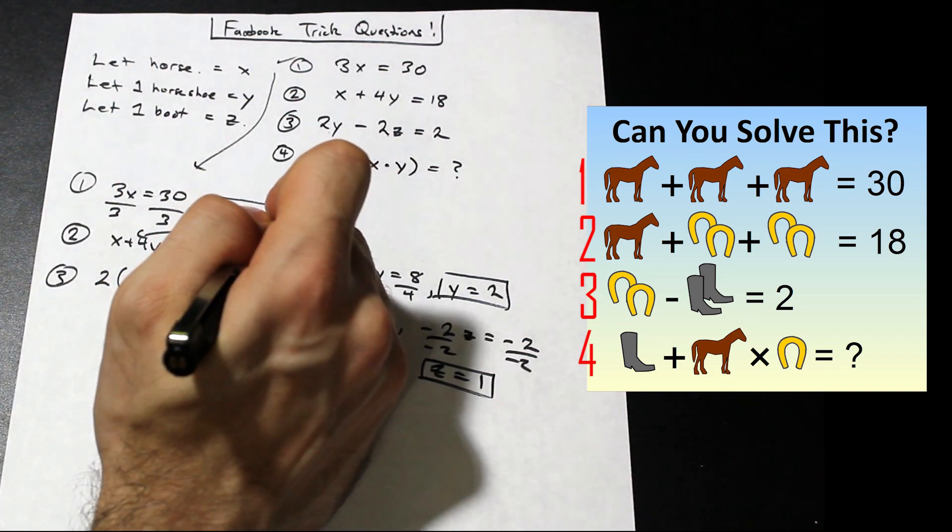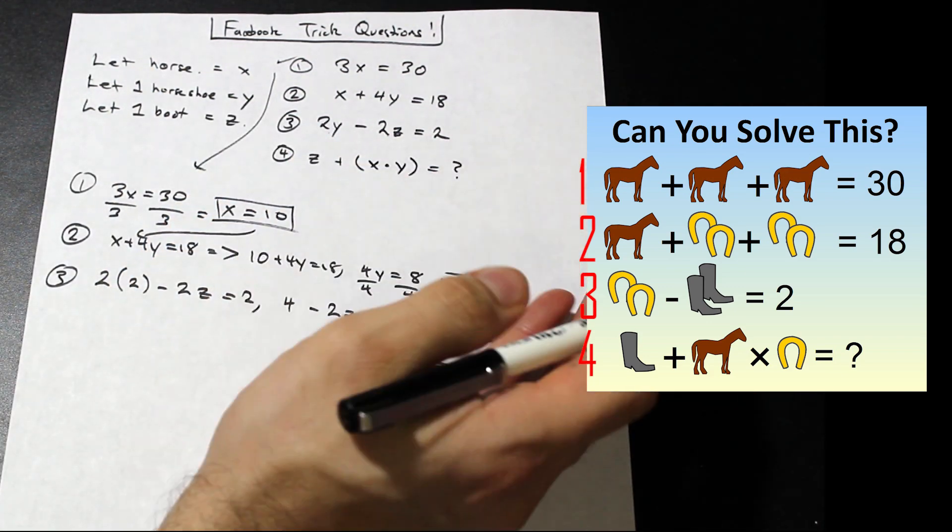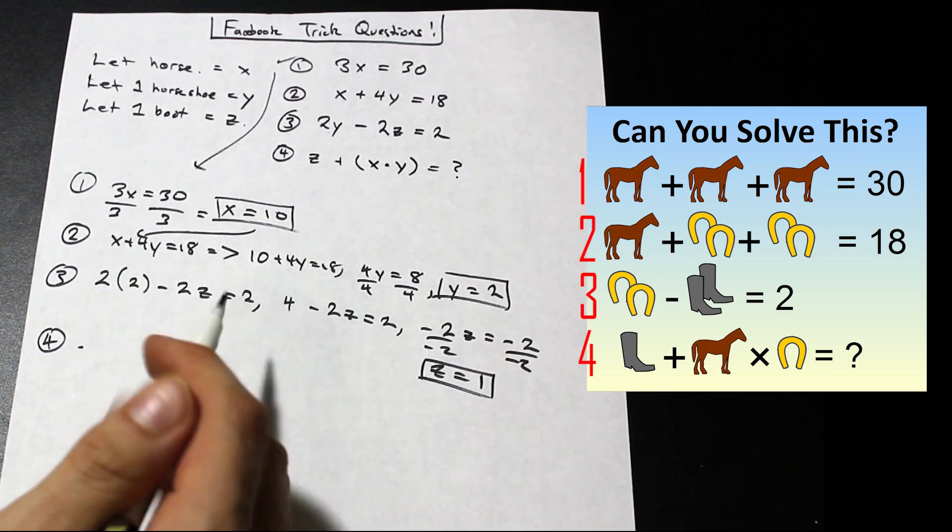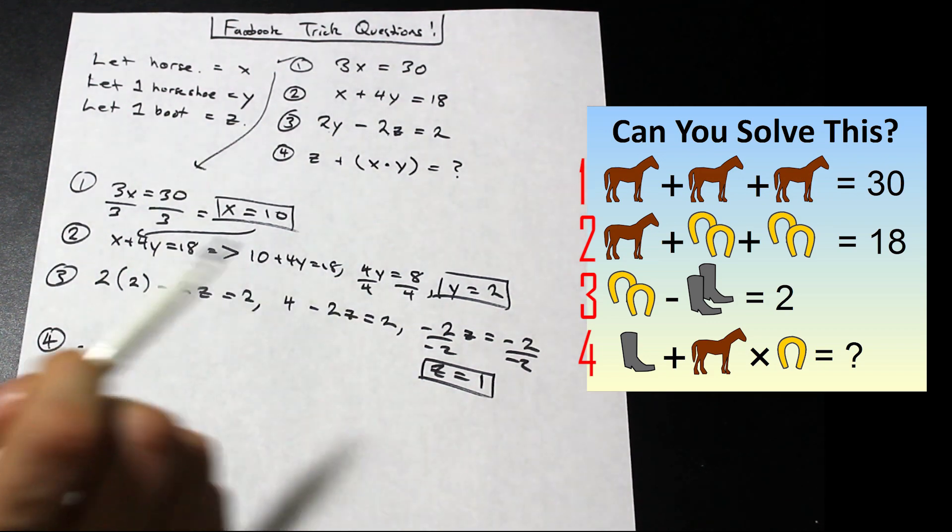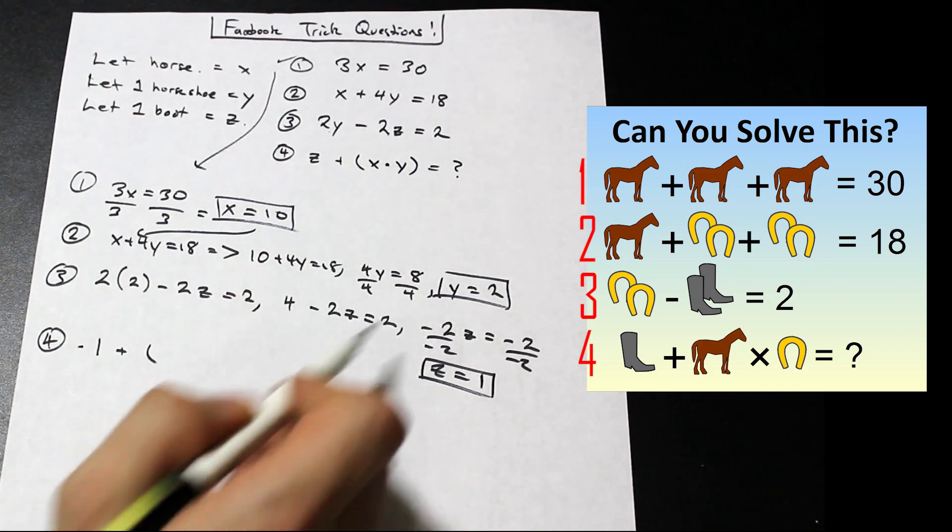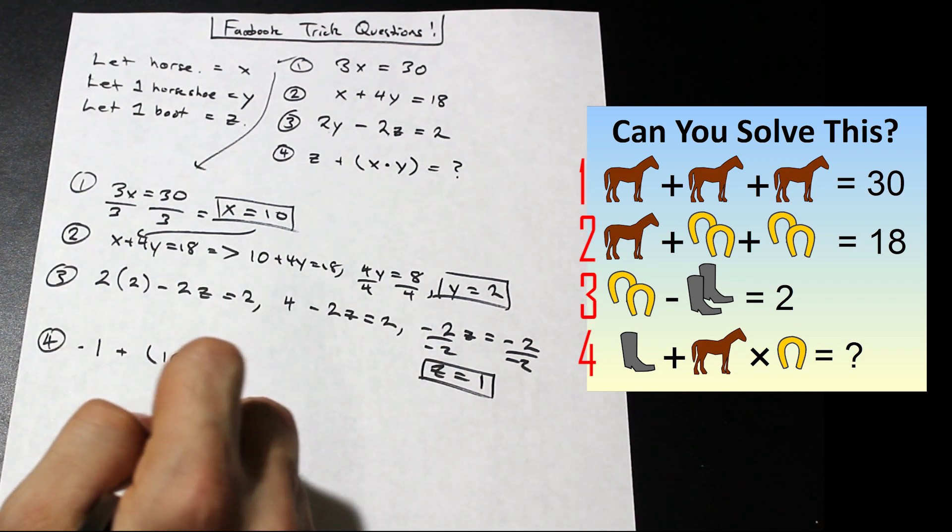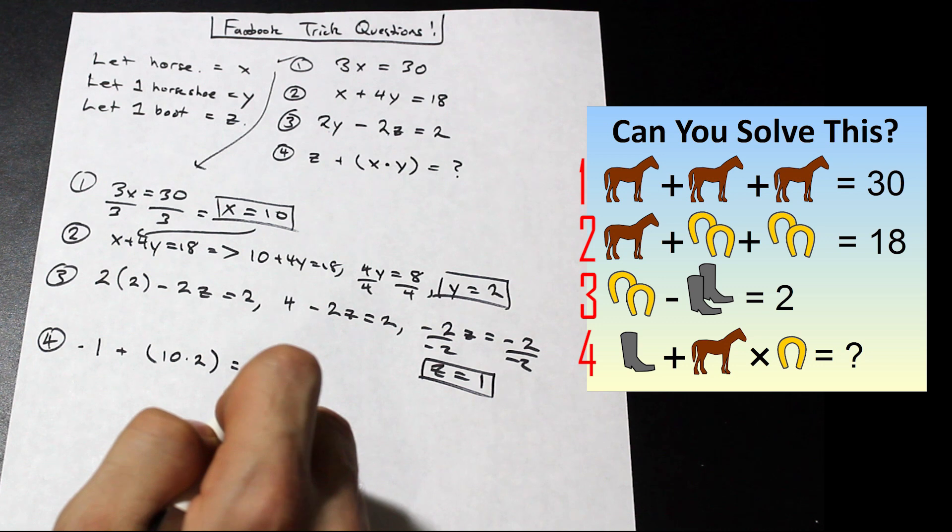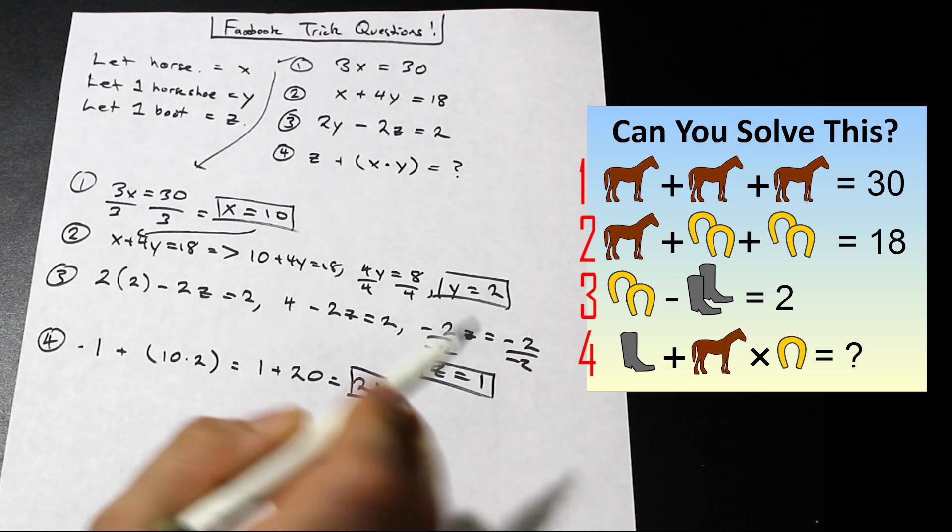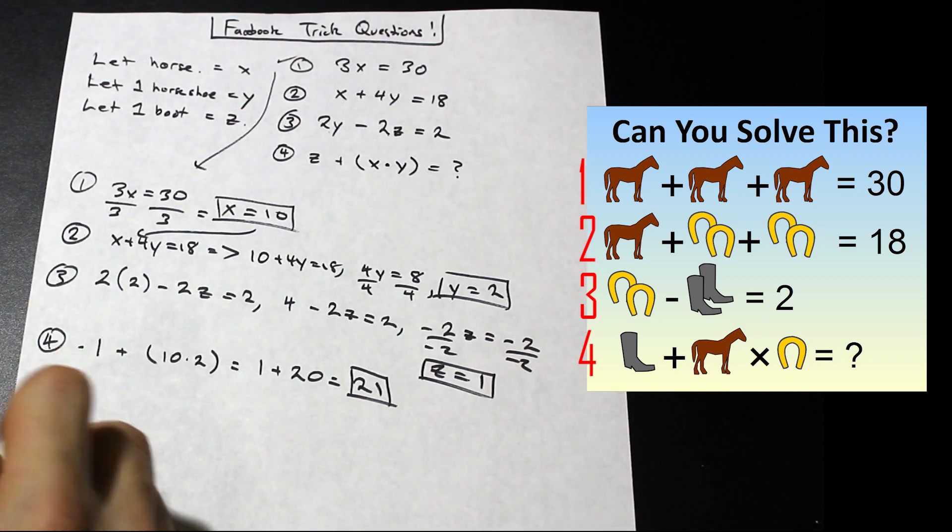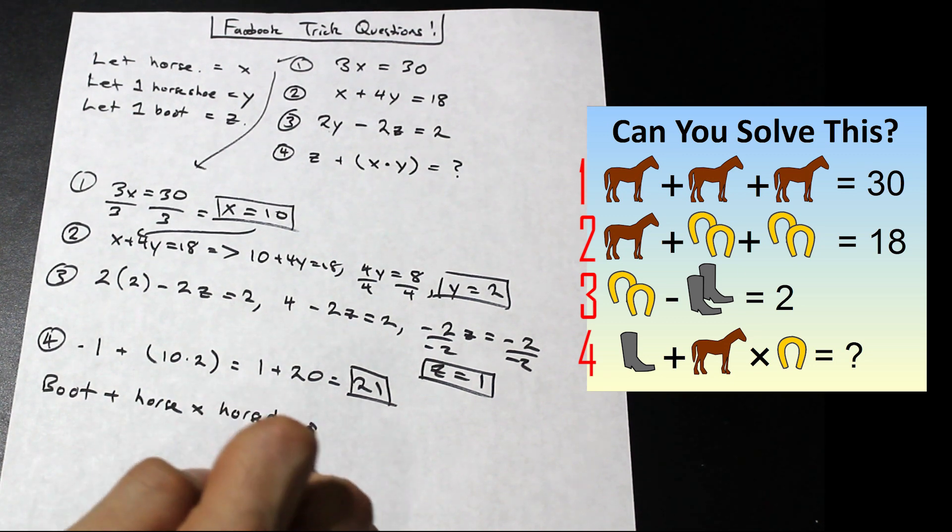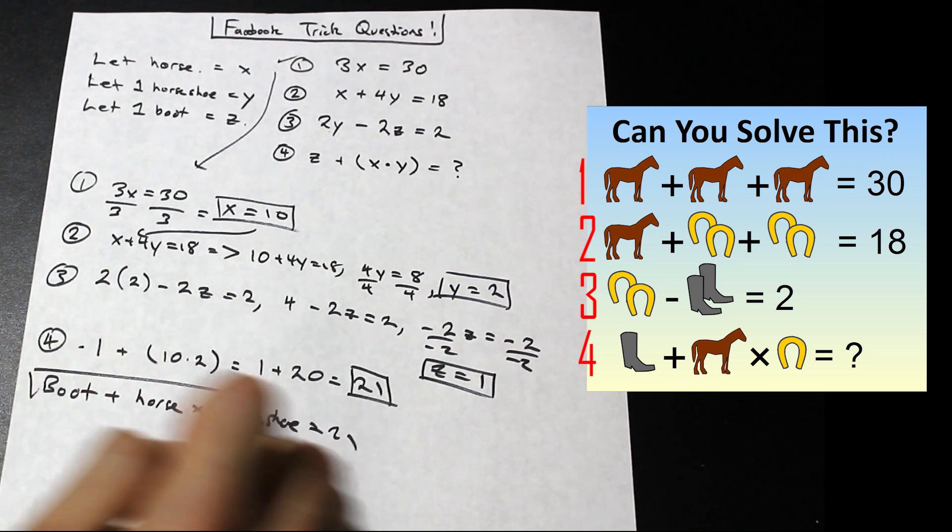And as you can see, we have all of the unknowns in the fourth equation that we need to solve the problem. So let's go ahead and let's plug into equation four, which is what the question is asking and let's solve it. So we're going to go ahead and plug in our Z, which is one. That's going to be plus the product of X and Y. So we have 10 times two. That's going to be equal to one plus 20, which is equal to 21. Okay, cool. So that's it. So the answer, boot plus horse times horseshoe equals 21 and that's our answer.